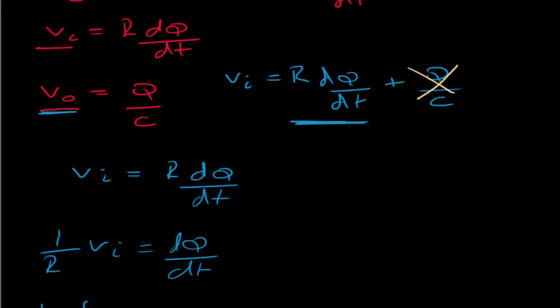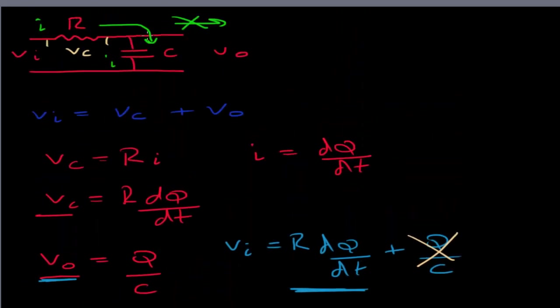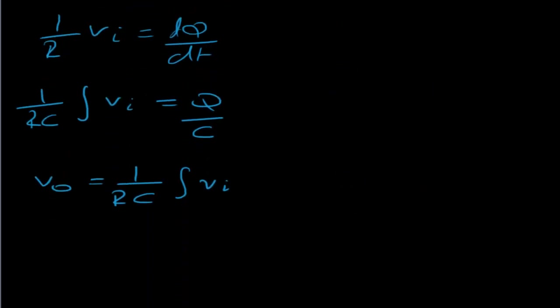Now, in practice, this isn't a very good integrator. The main reason for that is that whenever I want to measure the voltage across here, I'll always draw a little bit of current, and maybe sometimes a lot of current, depending on what I'm doing. And that disturbs this assumption. So it's not a particularly good integrating circuit. And what people generally do is they use an op-amp in conjunction with this, and that allows us to draw current from the op-amp without disturbing the integrator itself. Okay, I think that'll do for now.